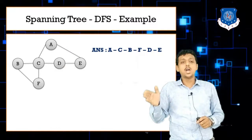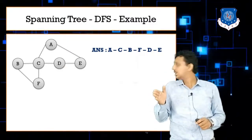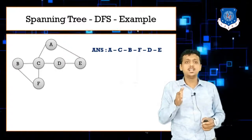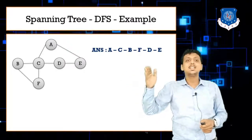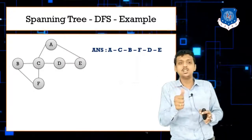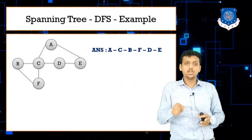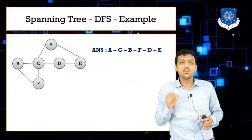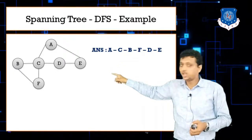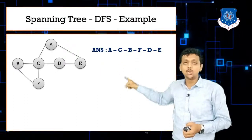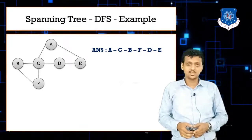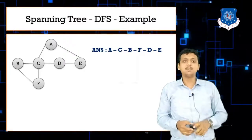In DFS, start with A, then go to adjacent node C. From C, the adjacent nodes are B and D — go with B. From B, the unvisited adjacent node is F, so go to F. At F, all adjacent nodes are visited, so backtrack to B, then to C. Now D is pending, so visit D, then E. The DFS answer is A, C, B, F, D, E — you can get this quickly by following the stack-based method from the previous lecture.